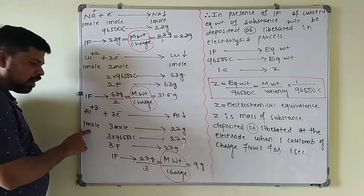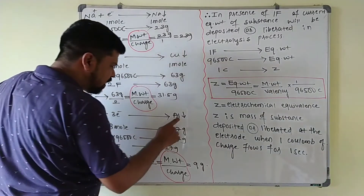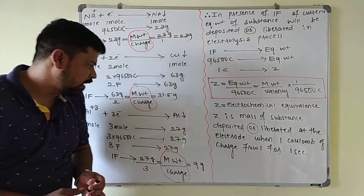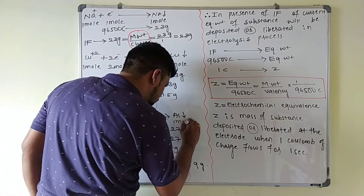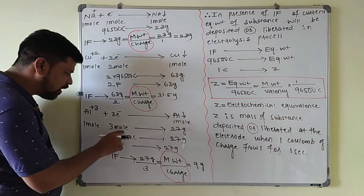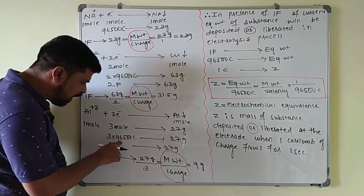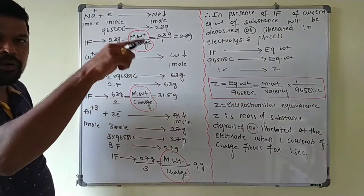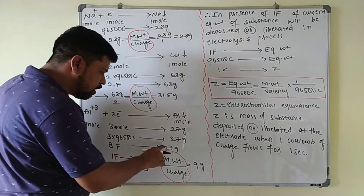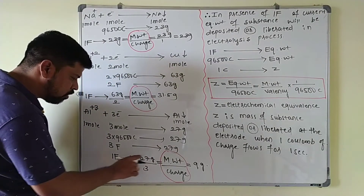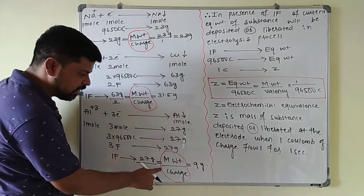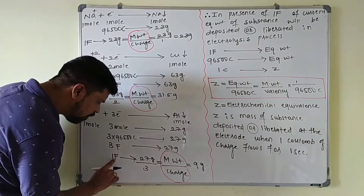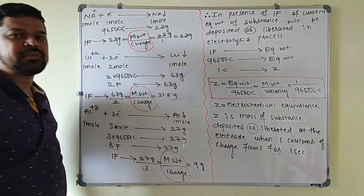This is further confirmed with aluminum: each one mole of Al³⁺ ions gains 3 moles of electrons so that one mole of aluminum (27 grams) is deposited. The charge on 3 moles of electrons is 3 × 96,500 coulombs, so 3 Faradays deposit 27 grams. Therefore, one Faraday deposits 27 / 3 = 9 grams of aluminum, which is the equivalent weight (atomic weight / charge = 27 / 3 = 9 grams). Always, one Faraday deposits the equivalent weight of any substance.